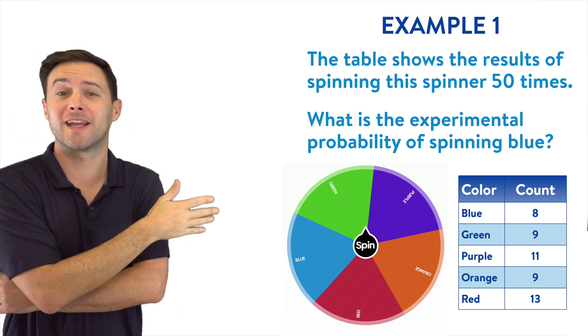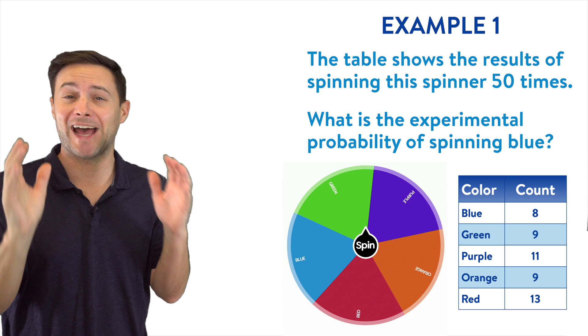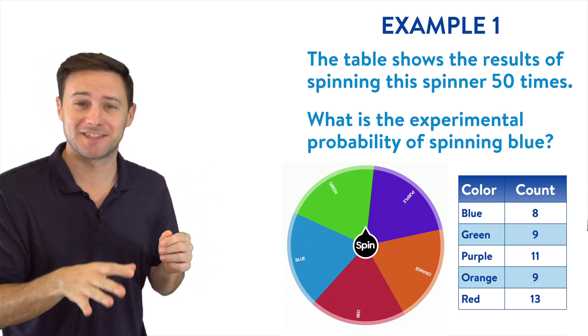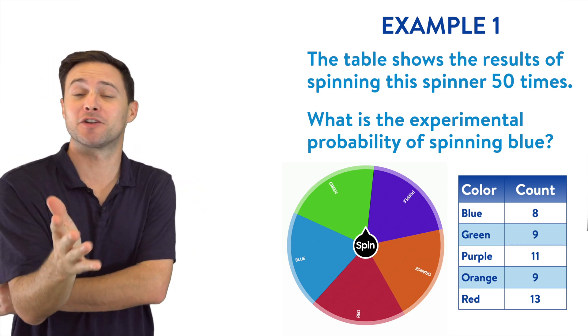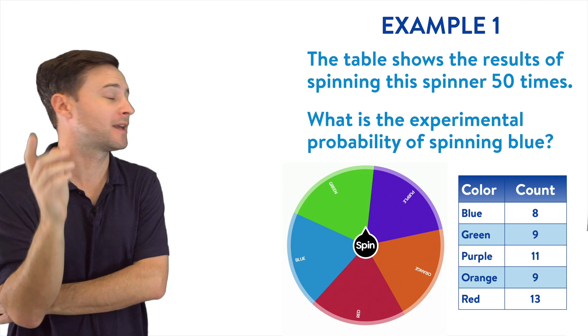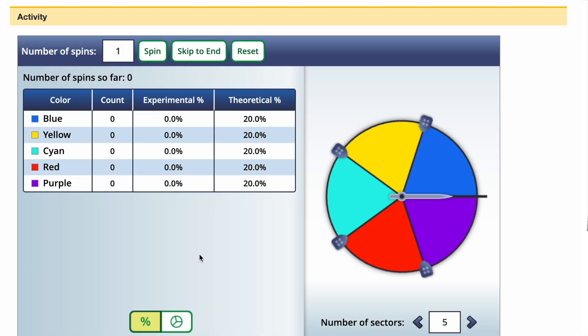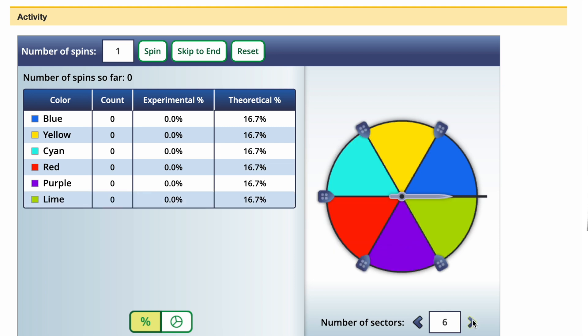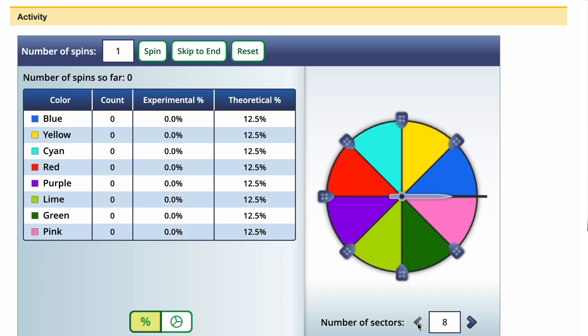Well first, where did I get those results? I actually didn't make a spinner and sit here and spin it 50 times. There's a great website NCTM, the link is in the description. You can customize your own spinner. You can decide how many sectors or sections the spinner has.